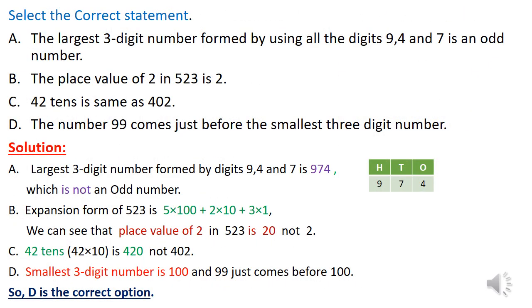Select the correct statement. A: The largest 3-digit number formed by using all the digits 9, 4, and 7 is an odd number. Let's check this. Largest 3-digit number formed by digits 9, 4, and 7 is 974, which is not an odd number. So this statement is not correct.